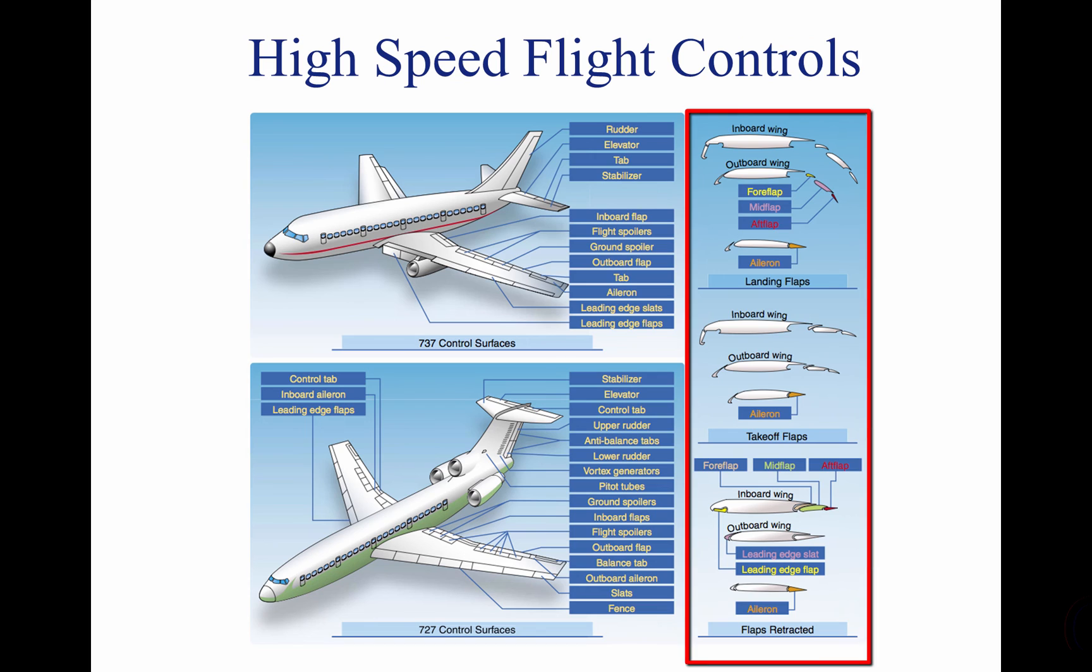Leading-edge slots, slats, and flaps are used to improve the low-speed characteristics during takeoff, climb, and landing. These devices can provide, on average, a 50-knot reduction in the stall speed of an aircraft.